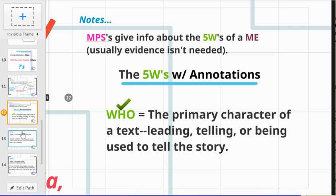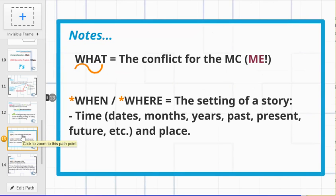Then we have our what, and this is the conflict, or in other words, this is the major event. What exactly is the tension for that main character? What's that character dealing with mentally, what's that character dealing with physically, or what is that character dealing with verbally that's pretty much taking a toll on their life or their actual moment?